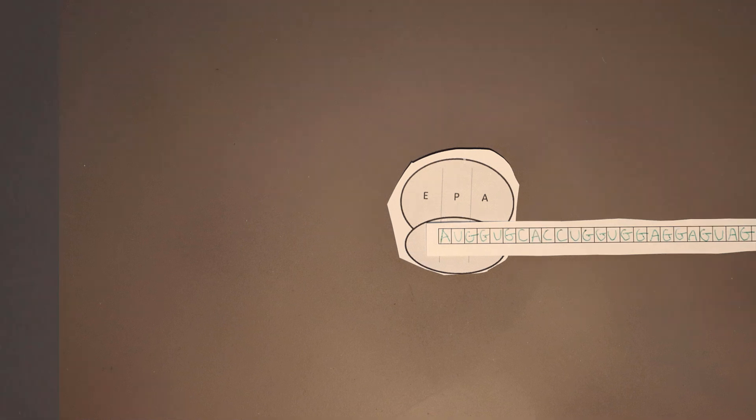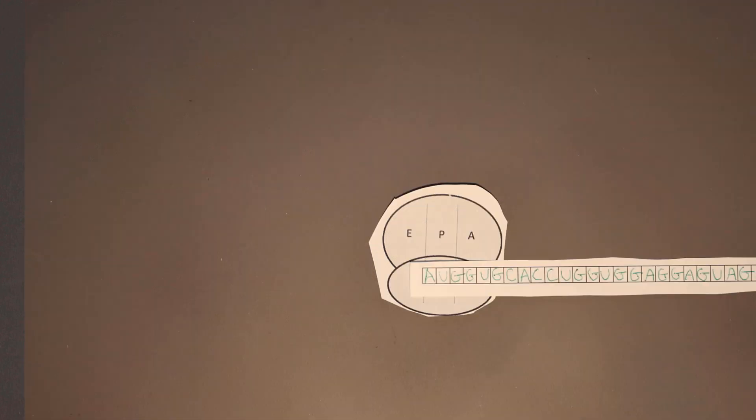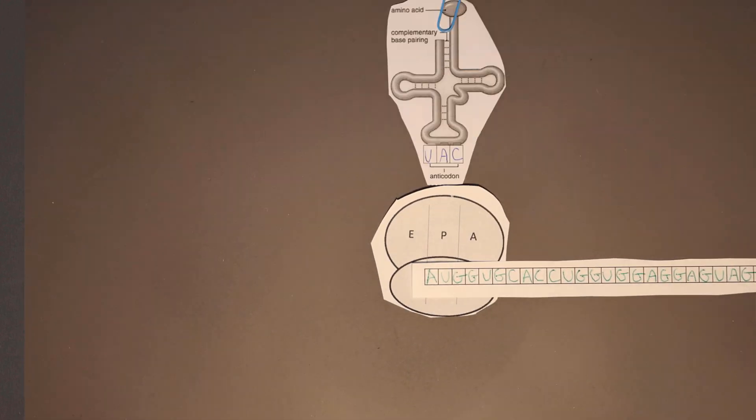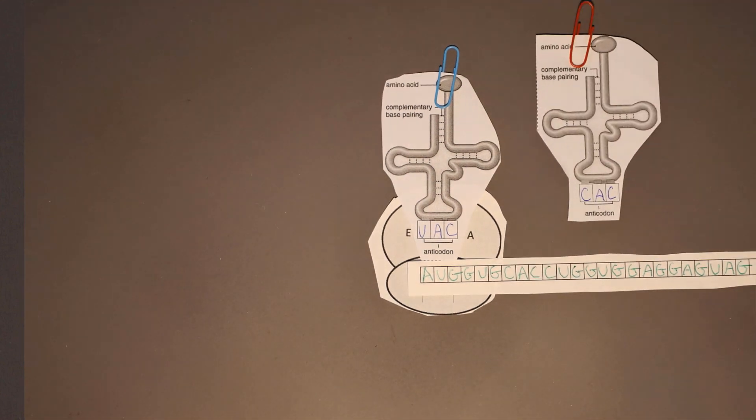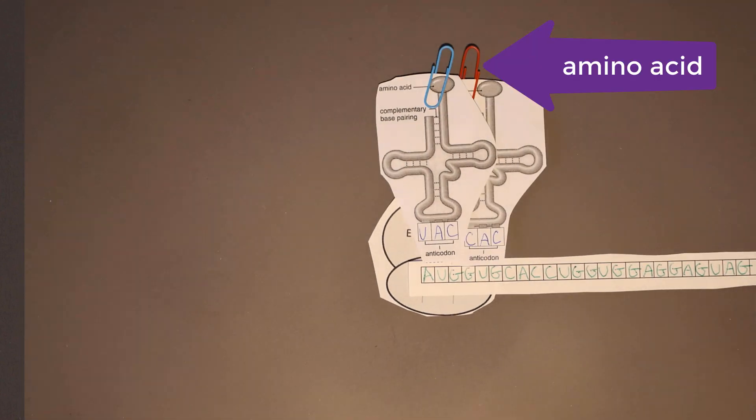Now, find the tRNA that has the anticodon that is a complementary match to your mRNA that's in your P site, as you see here. Do the same thing for the codon and tRNA that is in the A site. In this particular example, we have a blue paperclip and a red paperclip.